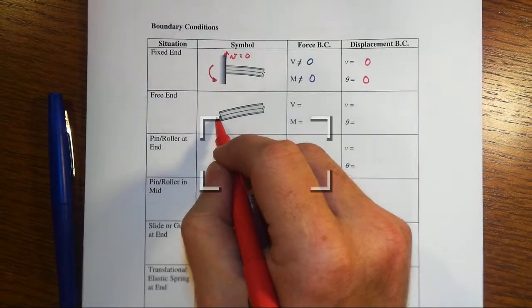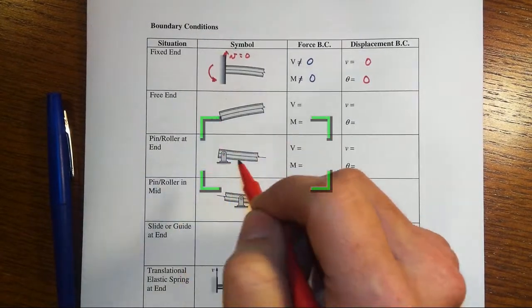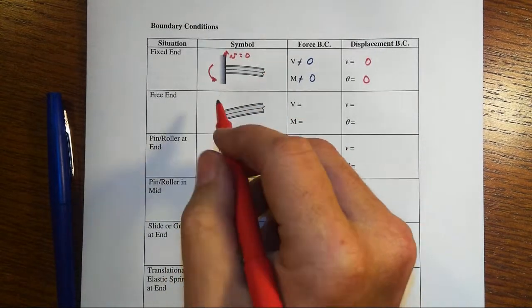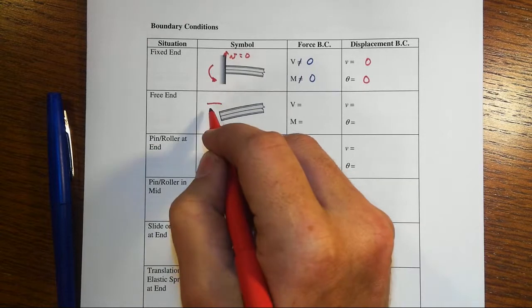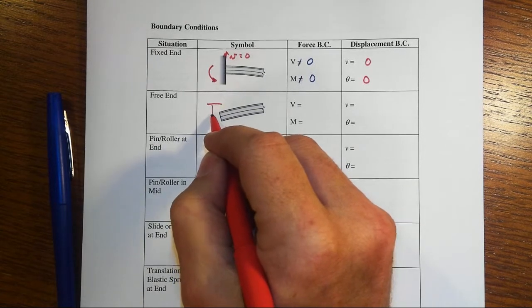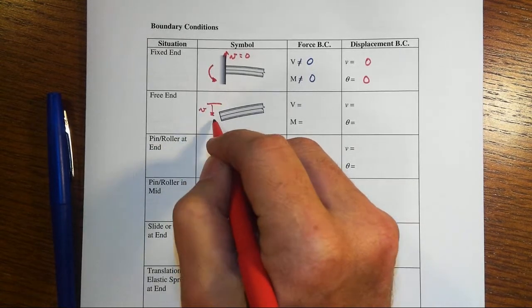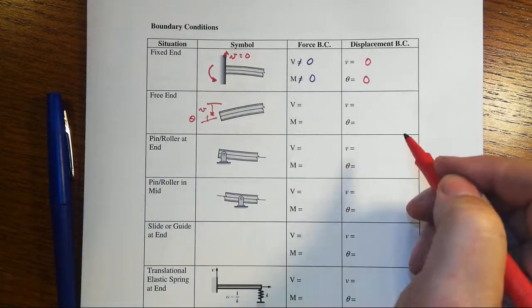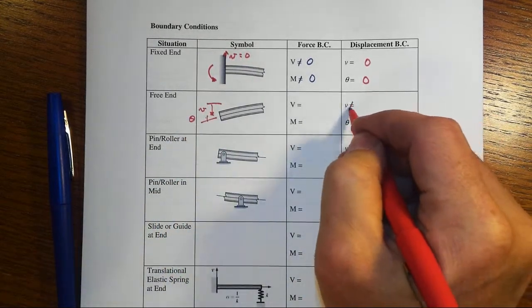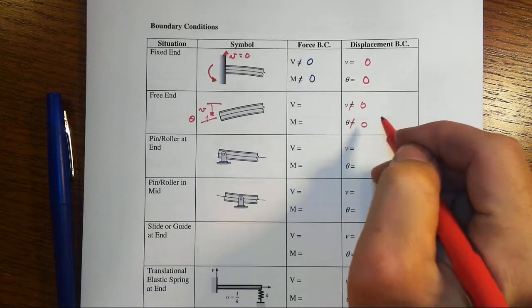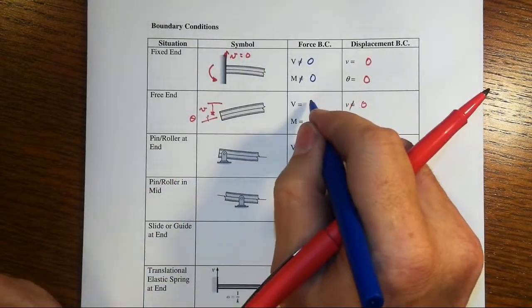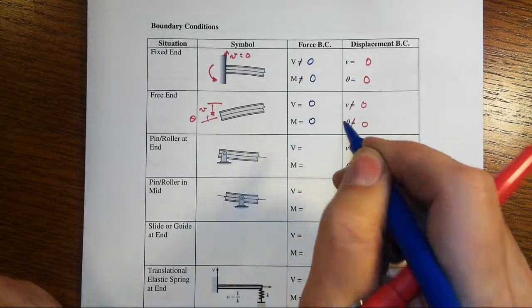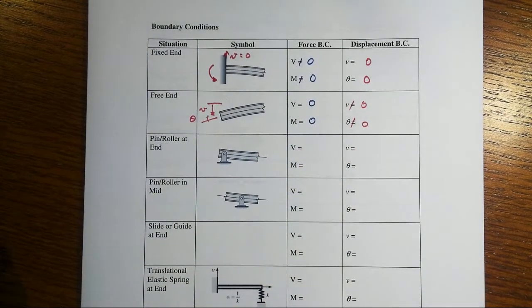Alright, let's look at a free end here. And at that free end, then we've got the possibility of a displacement that will be zero. Or sorry, it will not be zero. It will come down. That's little v. And some sort of slope or rotation will happen. So neither one of those is zero. But on the other hand, for this specific condition, then the shear would be zero and the bending moment would be zero for those end conditions.